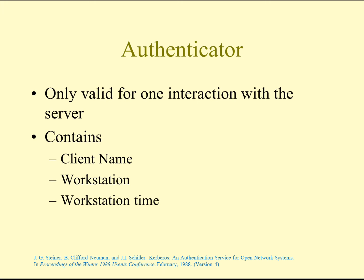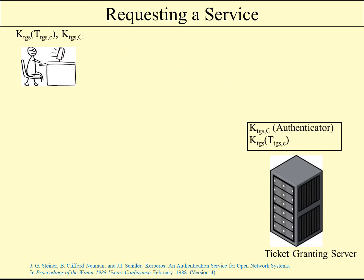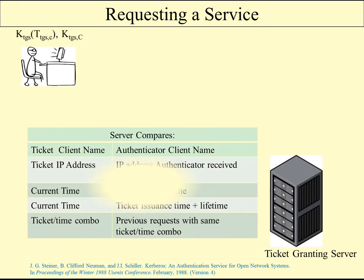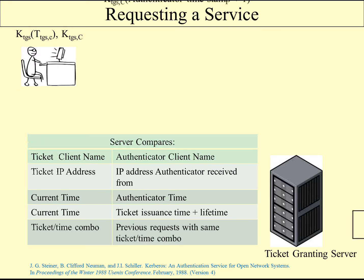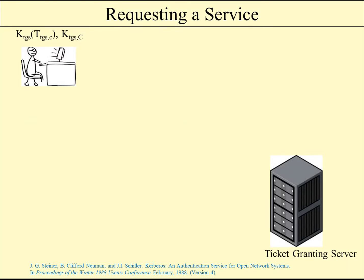The ticket is only valid for one interaction with the server. It contains the client name, workstation, and the workstation time. To request a service through the authenticator, we send this over to the ticket-granting server. The server then decrypts the ticket with its own ticket-granting server key and extracts the session key. It then compares the client name, IP, time, and other information from the ticket, and sends back a response authenticating us.